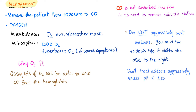Management: first, remove the patient from the exposed environment. CO is not absorbed through skin, so there is no need to remove clothing. In the ambulance, give oxygen through a non-rebreather mask. In the hospital, give 100% oxygen. If that fails or symptoms are severe, use the hyperbaric oxygen chamber. Giving lots of oxygen competes with CO and displaces it from hemoglobin — competitive inhibition. Do not aggressively treat the acidosis, because acidosis shifts the oxygen-binding curve to the right, which partially corrects the left shift caused by CO poisoning.